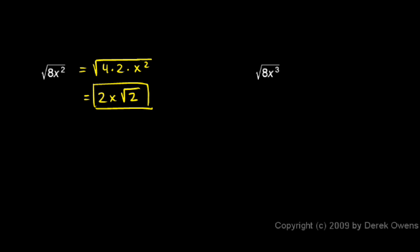Over here, 8x cubed. Well, the 8, again, is 4 times 2. And the x cubed, I'm going to write that as x squared times x. And that makes it clear that I have a perfect square here and here.